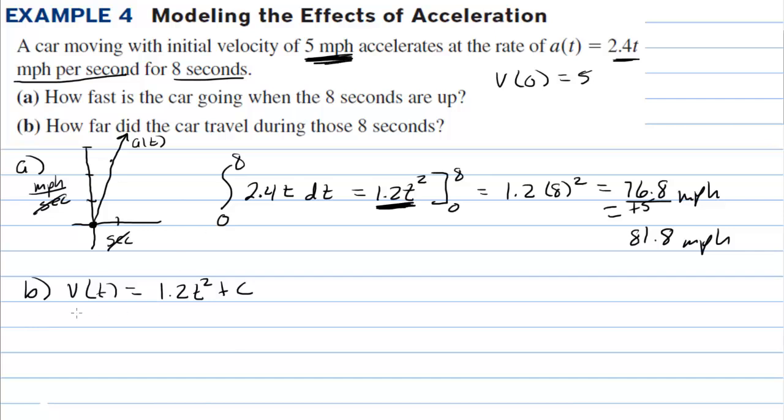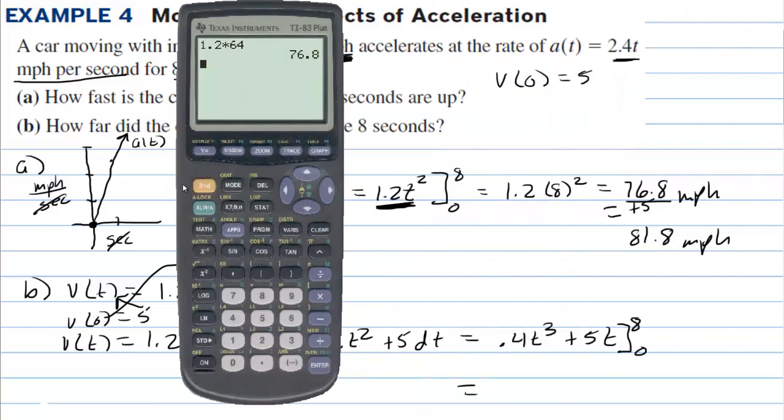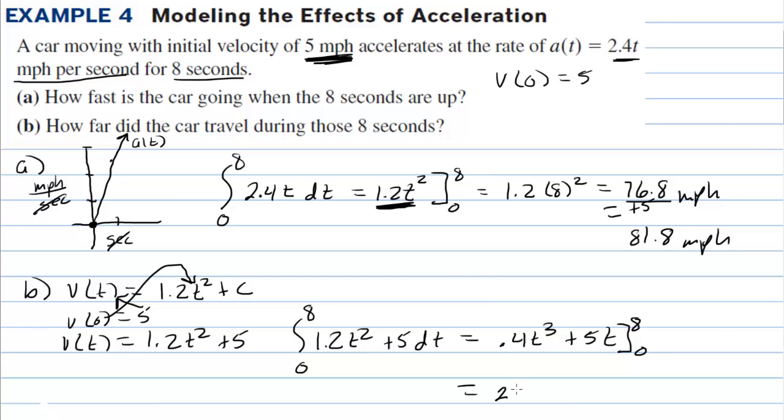So the velocity function is 1.2t² + 5. We're going to integrate that from 0 to 8 to find the displacement of the car. So we have to integrate 1.2t² + 5 dt, which is 0.4t³ + 5t. And we're evaluating that from 0 to 8. Once again, each of these has a t in it, so we're not going to really have to worry about the 0. We just have to worry about the 8. So I'm going to grab the calculator to do this last little bit. We have 0.4 times 8³, and then plus 5 times 8 is 40. And we have 244.8.